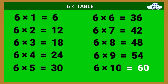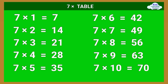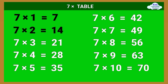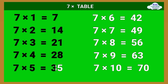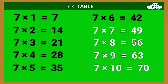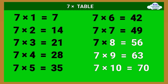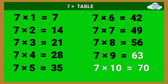6 times 10 equals 60. 7 times table: 7 times 1 equals 7, 7 times 2 equals 14, 7 times 3 equals 21, 7 times 4 equals 28, 7 times 5 equals 35, 7 times 6 equals 42, 7 times 7 equals 49, 7 times 8 equals 56, 7 times 9 equals 63.